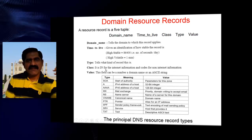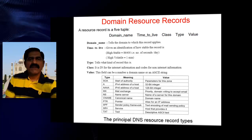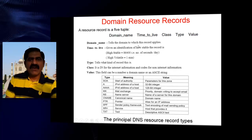The third field is class. It is 'IN' for internet information, or other codes for non-internet information. It indicates what type of class the record belongs to — whether it is IN or some other code. The fourth field is type, which indicates what type of record it is. The fifth field is value — this field can be a number, a domain name, or an ASCII string. These are the five elements: domain name, time to live, class, type, and value — these are all the details you will get in the reply.